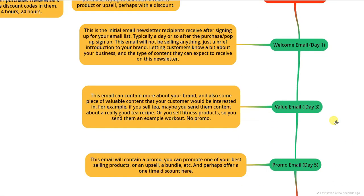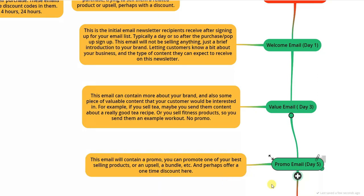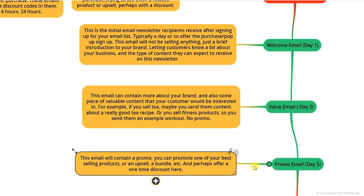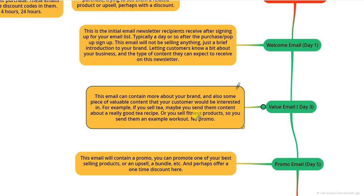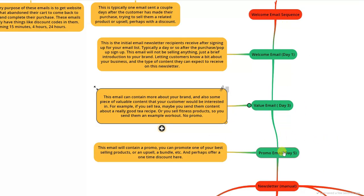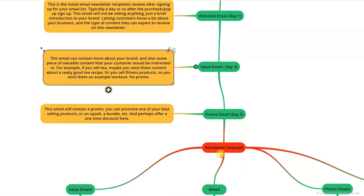The next email is the promo, sent around day five — so for example, welcome on Monday, value on Wednesday, promo on Friday. The promo email contains a promotion: one of your best-selling products, an upsell, a bundle, or a one-time discount code. Ideally, by this point people will open it because you've already sent them two emails of content they like. After this sequence, people enter the manual section of your newsletter.